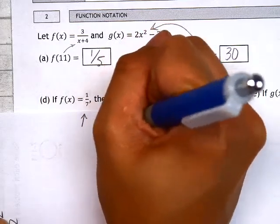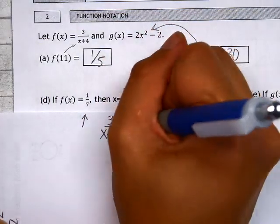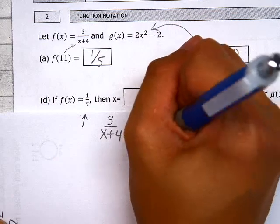3 over x plus 4, whatever that is, has to equal a final answer of 1 over 7.